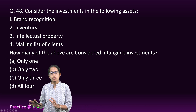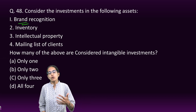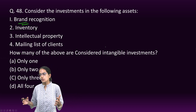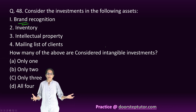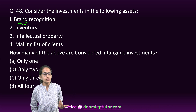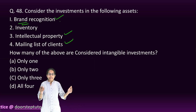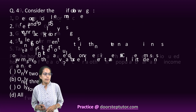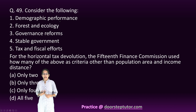On intangible investments: These are investments that cannot be physically visualized, unlike inventory. Examples include brand value, goodwill, intellectual property, and customer/mailing lists. For instance, a brand like 'Examiners' cannot be physically seen but holds value. So options 1, 3, and 4 are the correct examples of intangible investments.